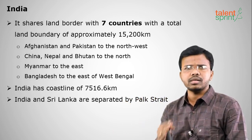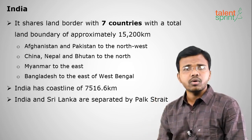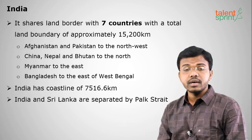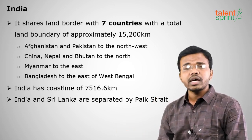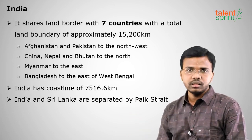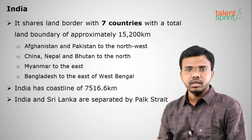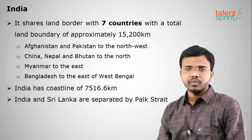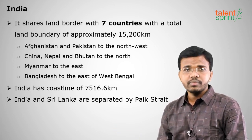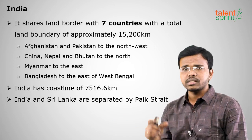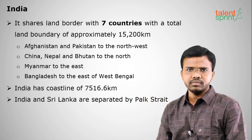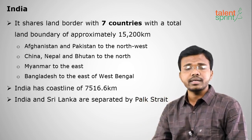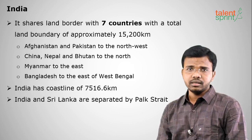The total land boundary is approximately 15,200 kilometers with these seven countries. India also has a coastline of 7,516 or 7,517 kilometers, including the Andaman and Nicobar Islands and Lakshadweep Islands. India and Sri Lanka are separated by the Palk Strait, which is a narrow gap between the Bay of Bengal and the Indian Ocean.